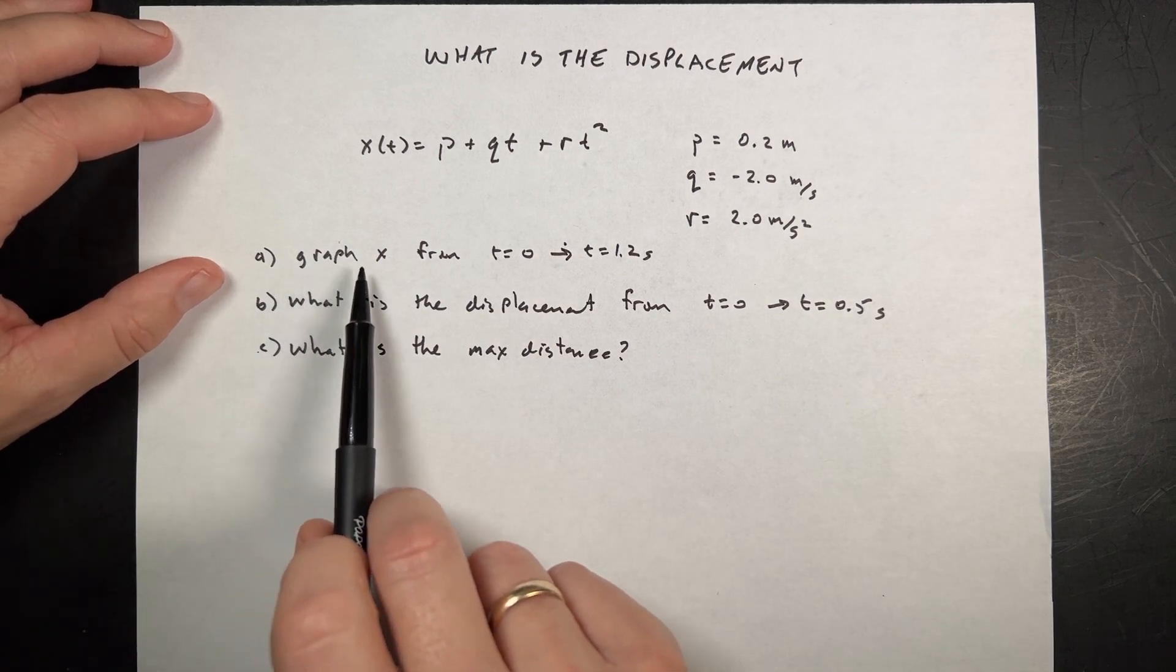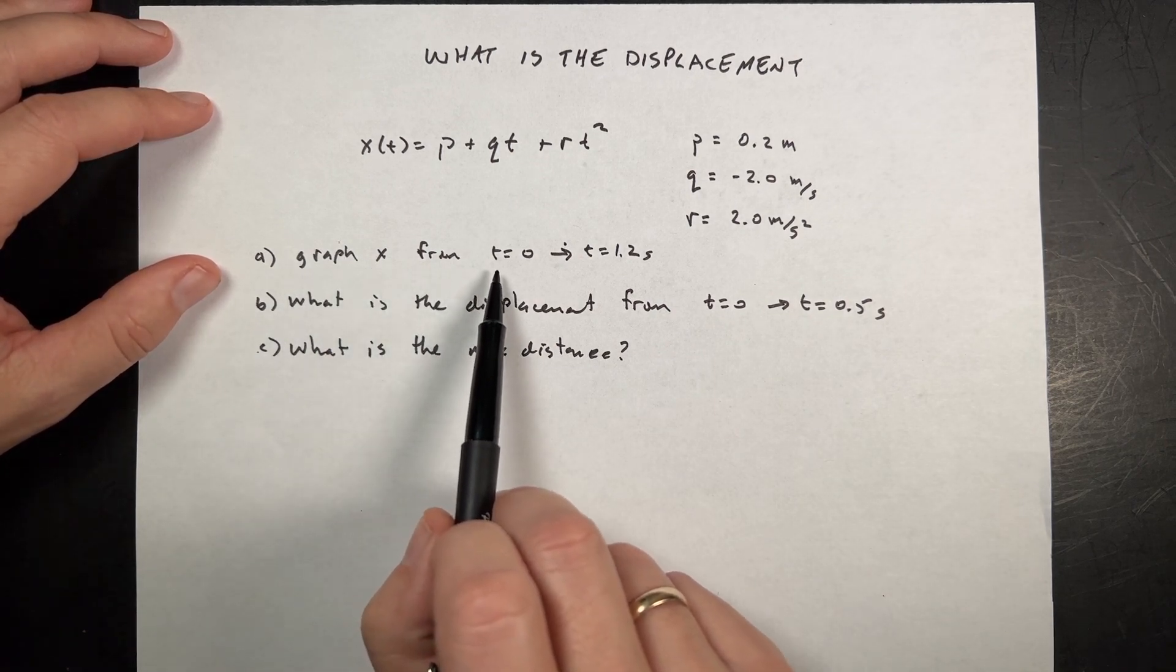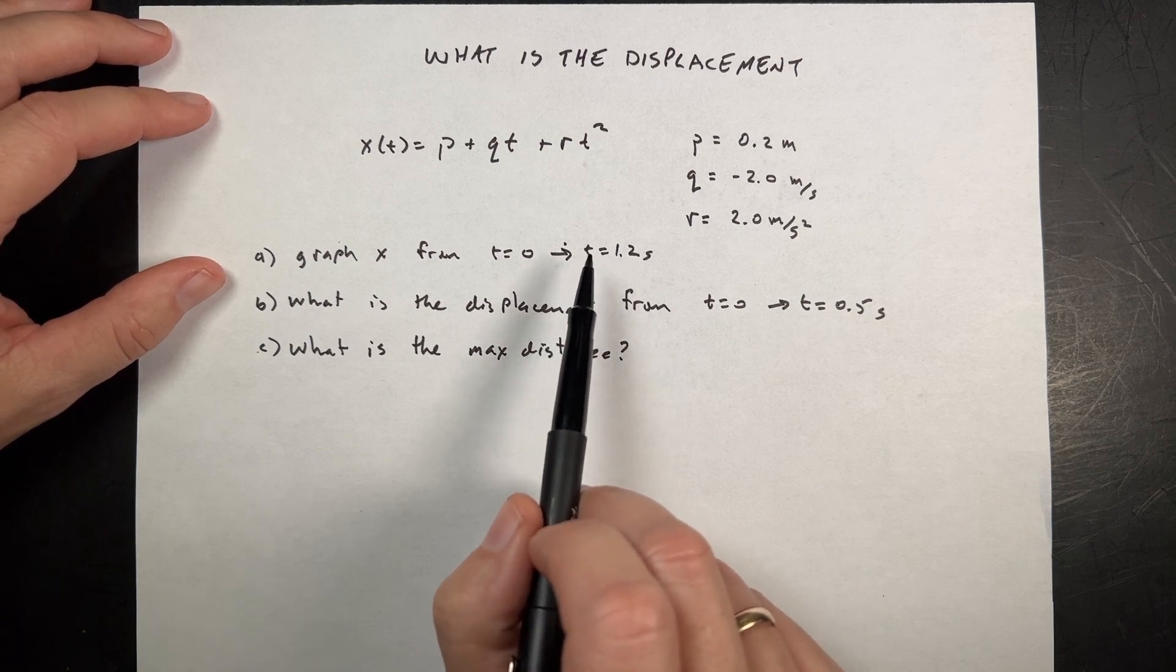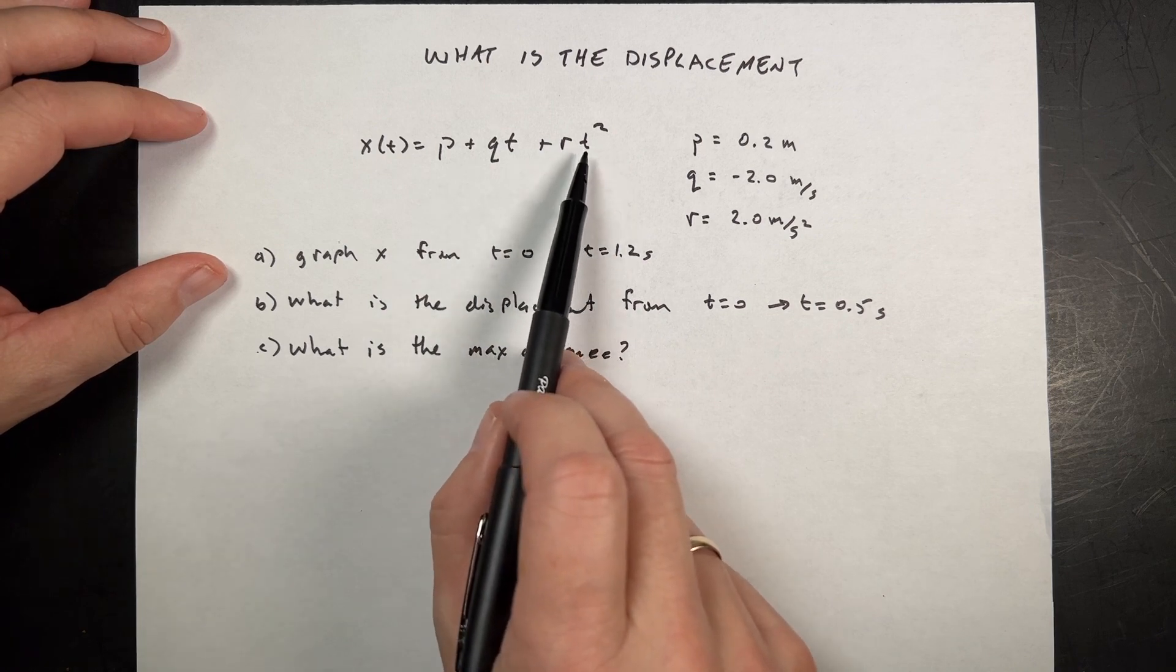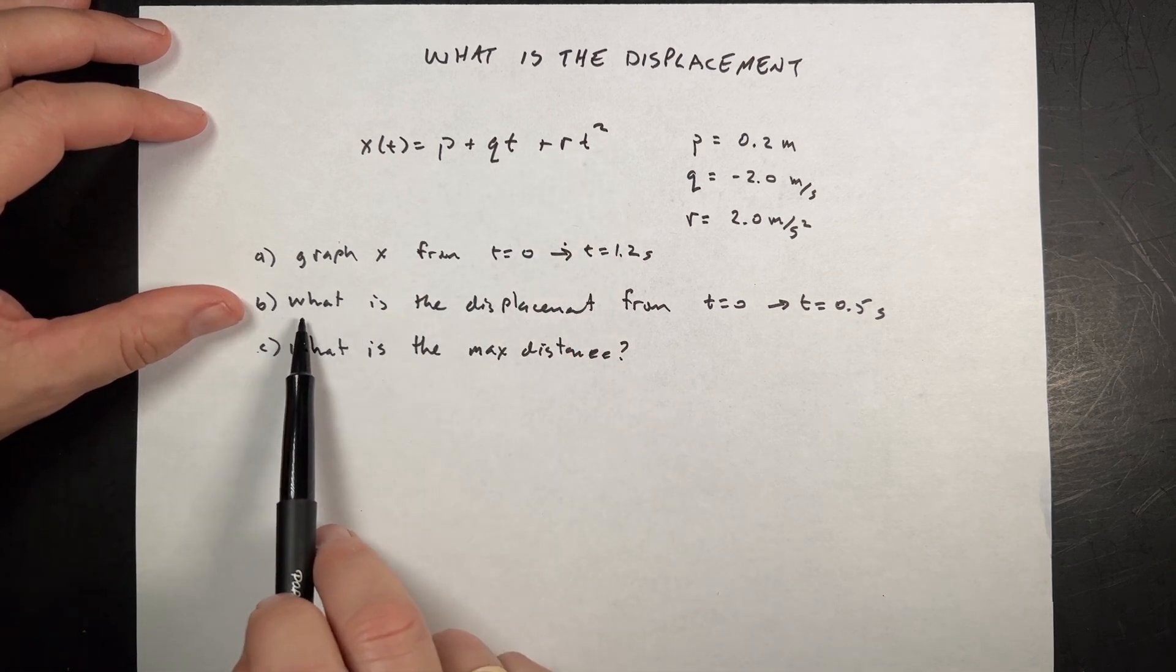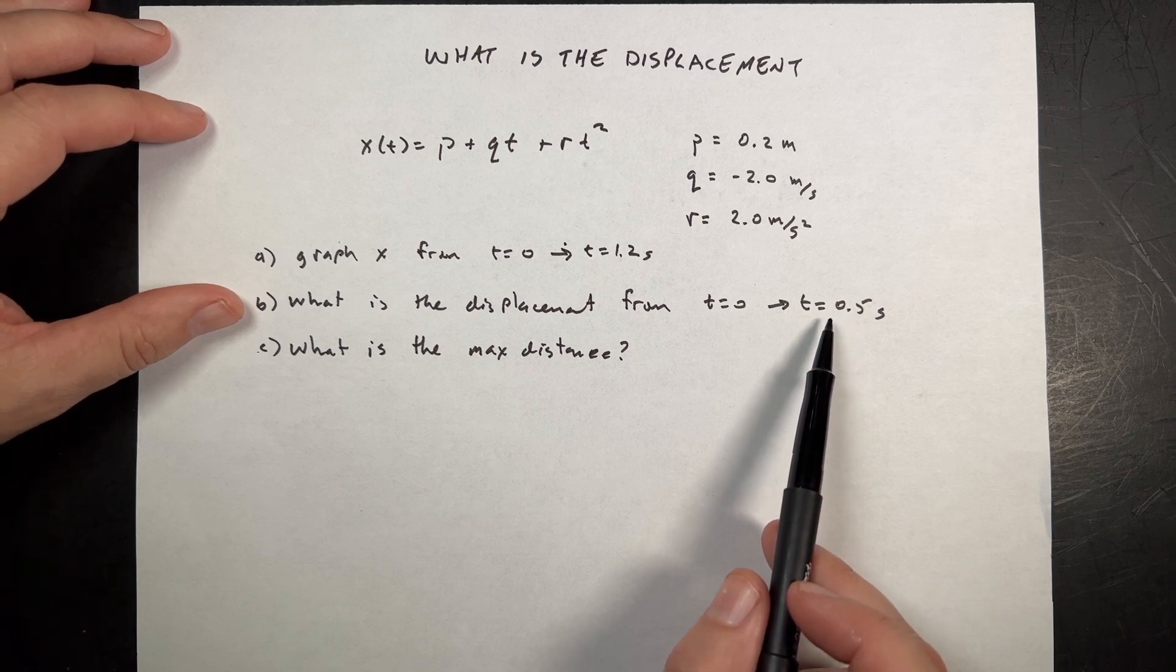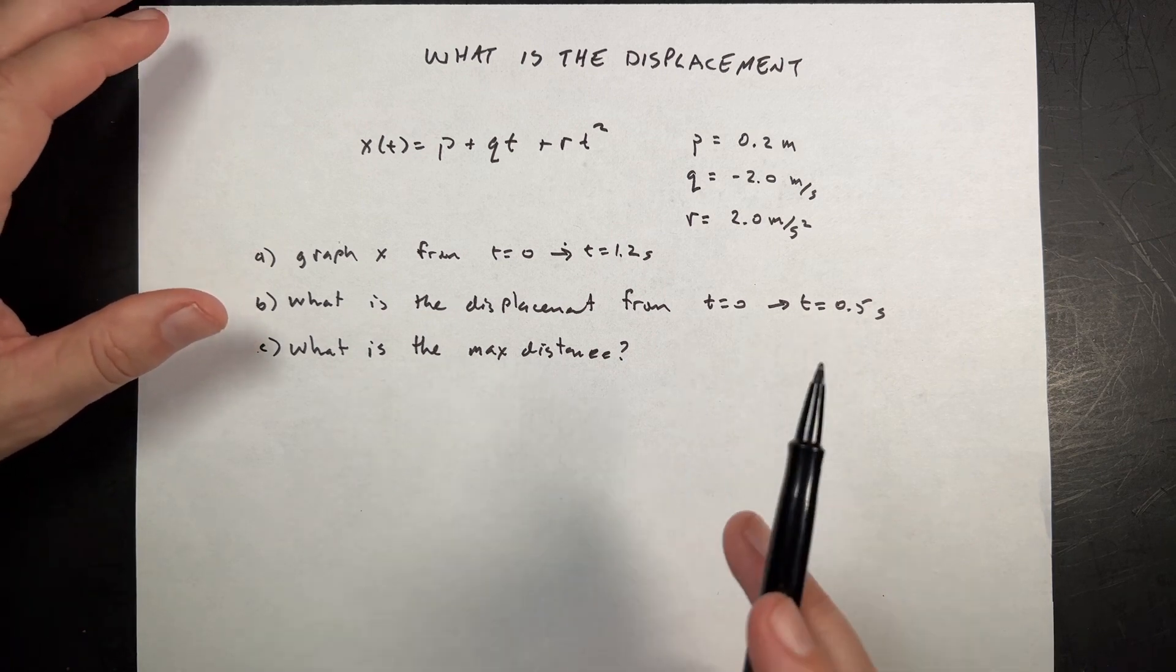So part A says graph the position from t equals 0 to t equals 1.2 seconds. I'm going to do that in Python. You could do it in a lot of different ways because that's a parabola, right? Because this is t squared. What is the displacement from t equals 0 to 0.5? That one's not hard. And then what's the maximum distance? That one's kind of interesting.